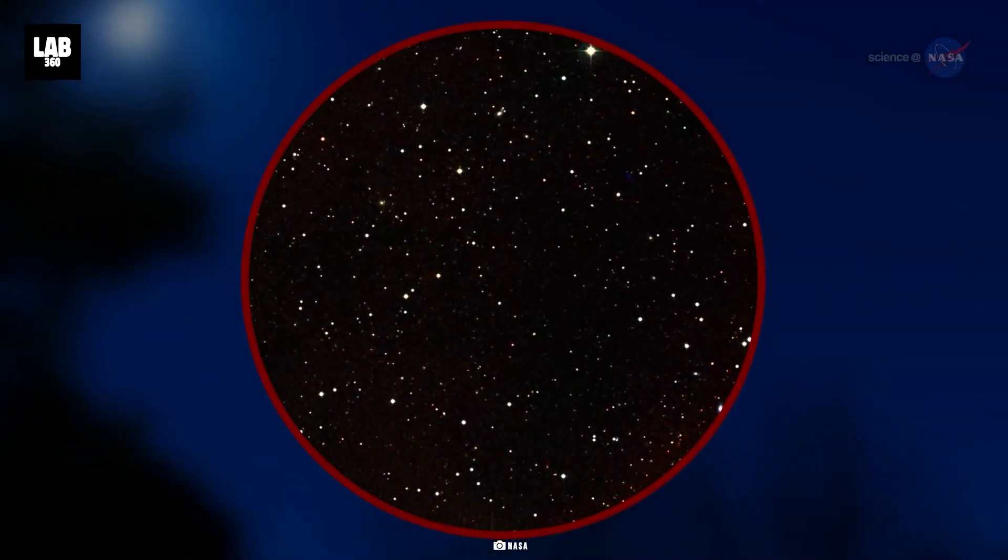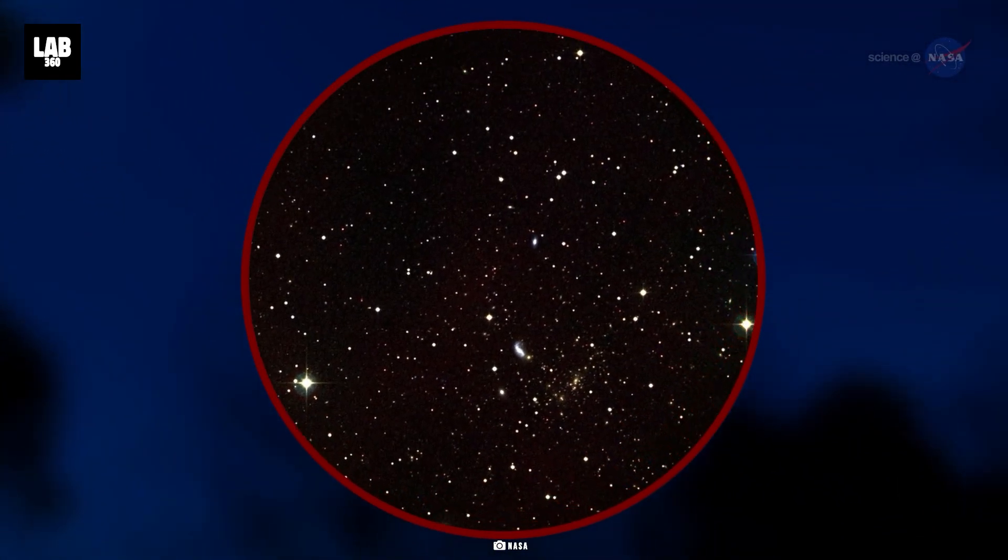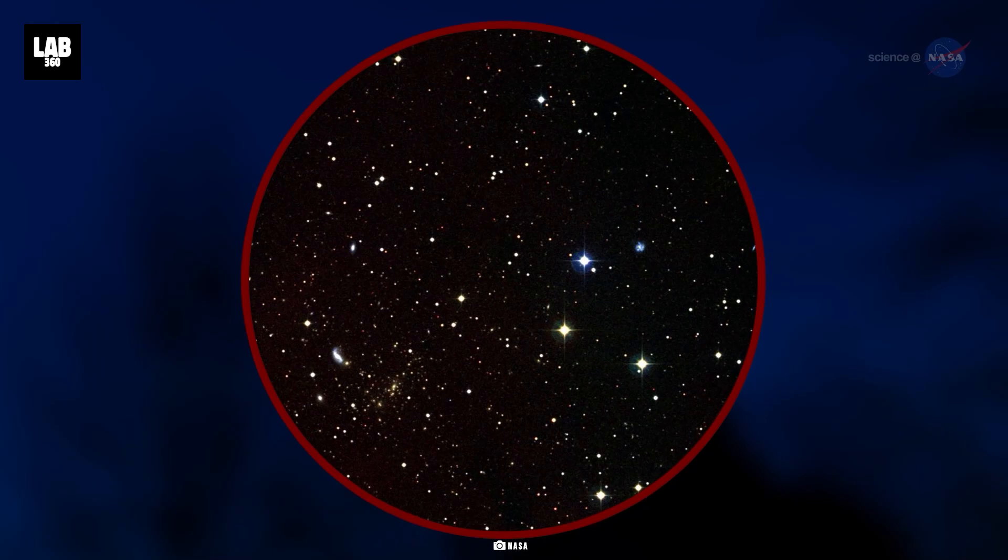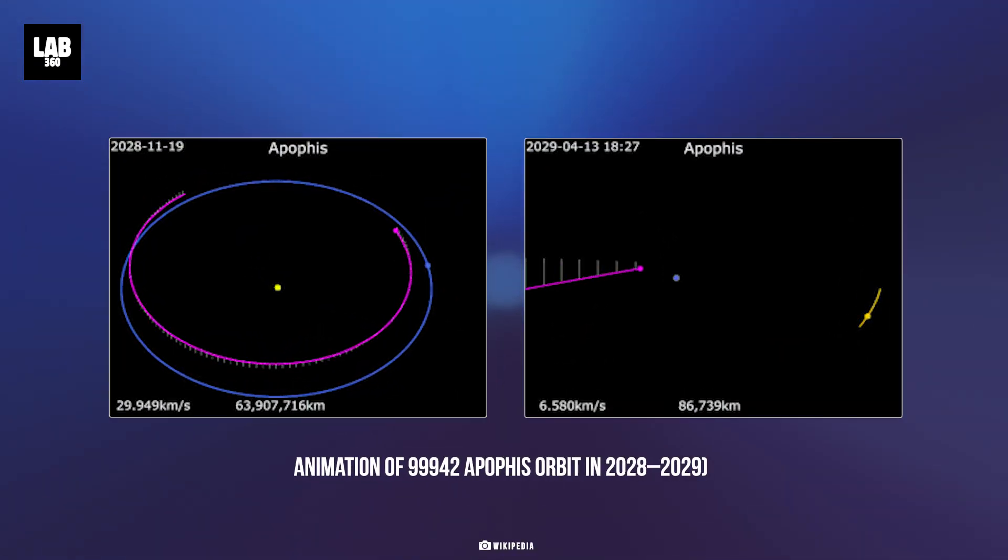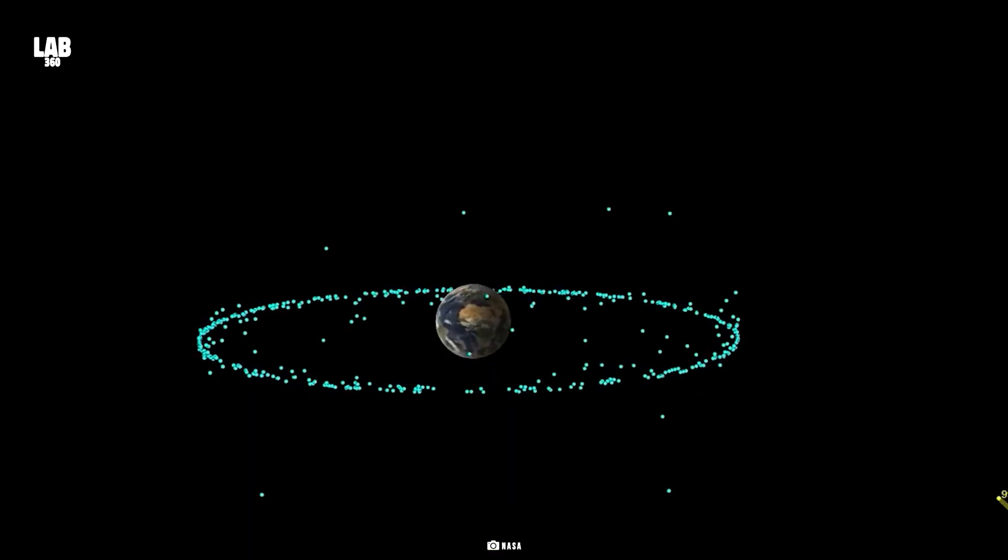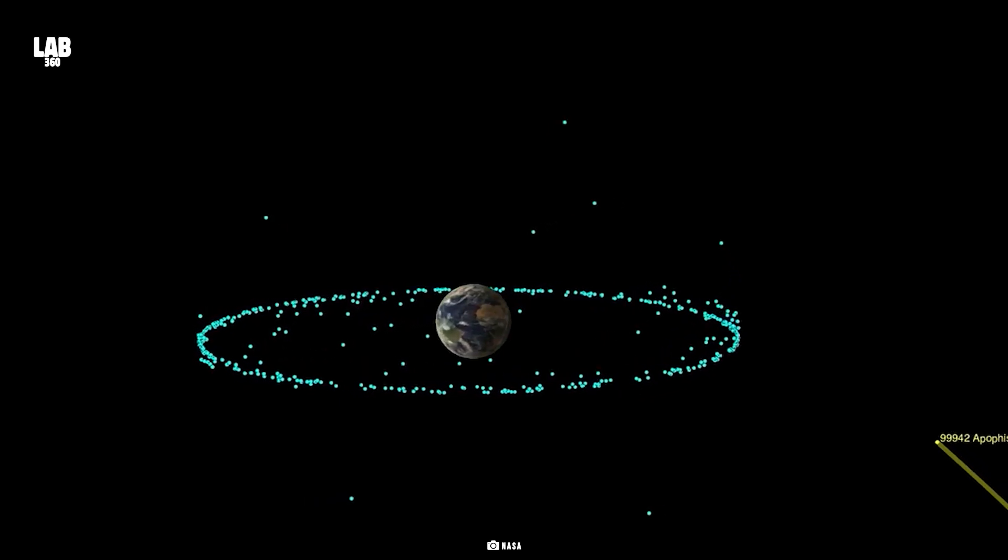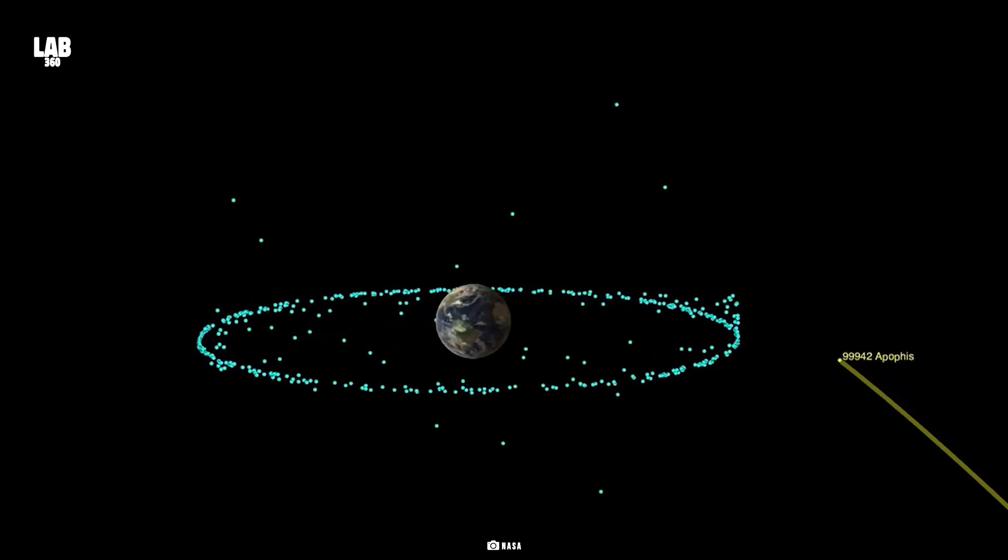Upon its discovery in 2004, it was termed as the most hazardous asteroid that could impact Earth. The initial observations further indicated a probability of up to 2.7% of hitting Earth in April 2029. Upon closer examination of its orbit, the 2029 impact was eliminated.